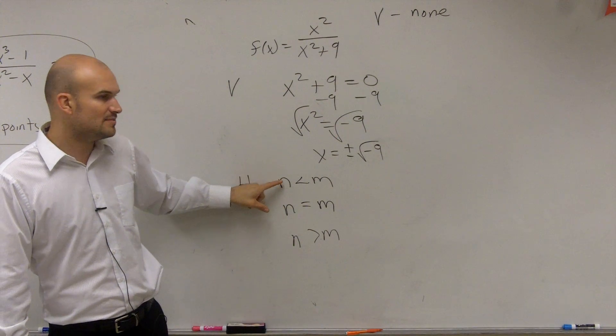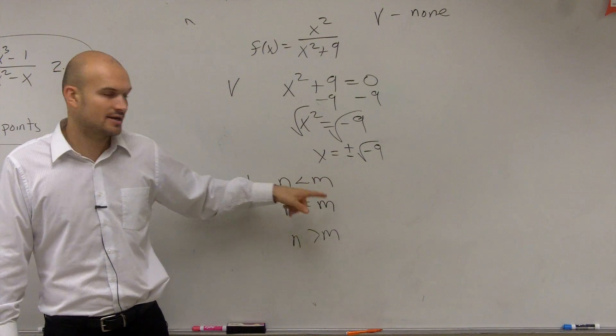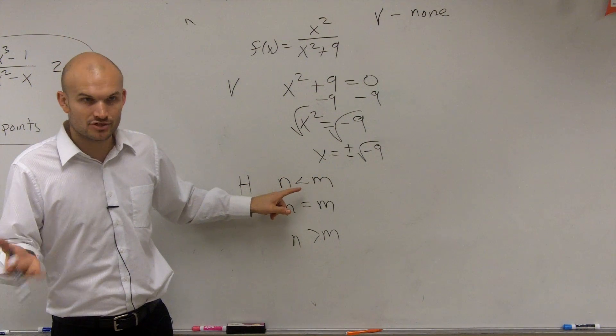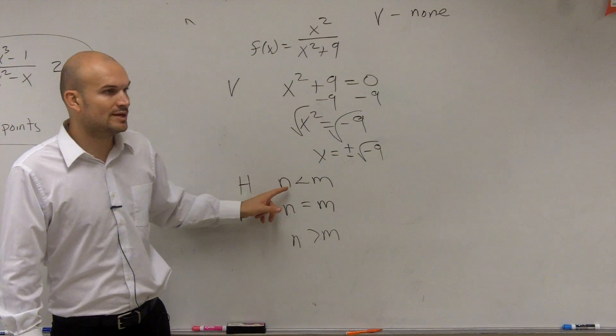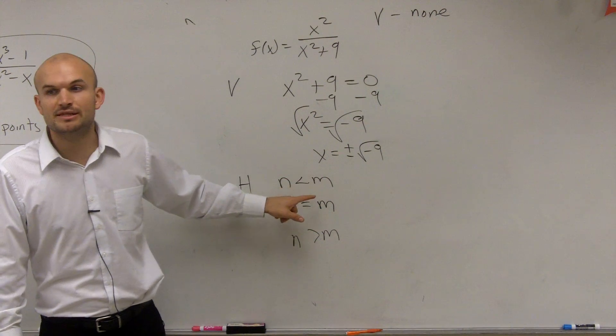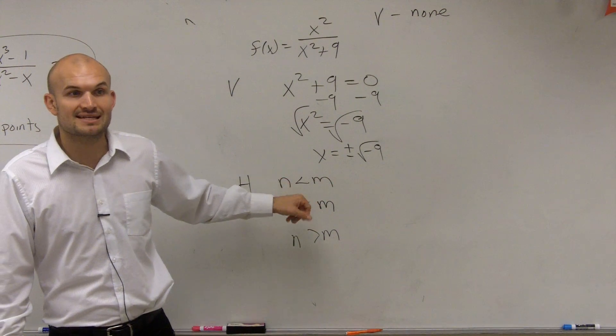And the degree, remember, is your largest exponent of your variable. So what we look at, n is going to be the exponent of my numerator. m is going, I'm sorry, n will be the degree, which will be the largest exponent, the degree of my polynomial in the numerator. And m is going to be the degree of my polynomial in the denominator.